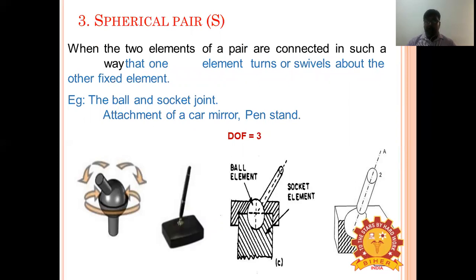In a spherical pair, one link is constrained to swivel about a fixed point. Examples include a pen stand, car mirror, and bike mirror — all having a ball and socket joint that swivels about a fixed point.